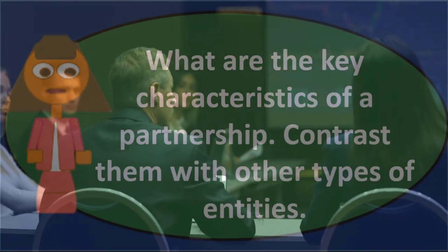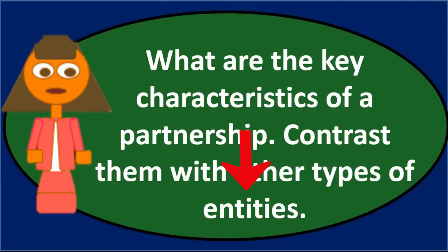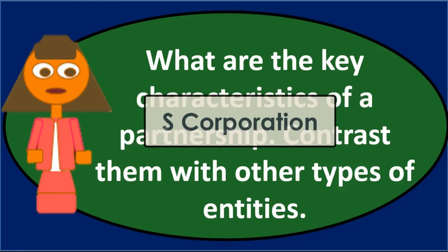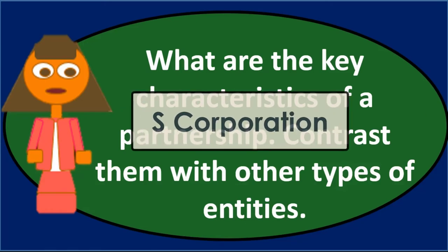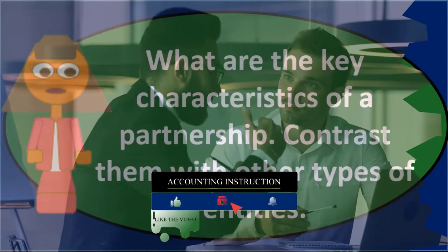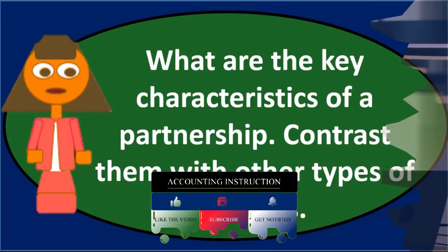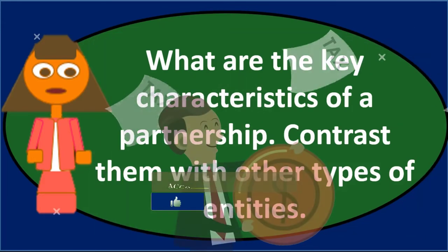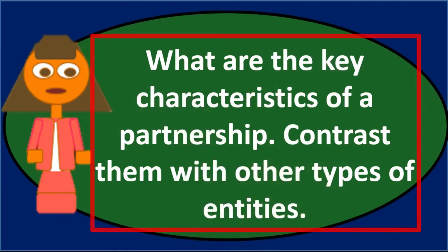These corporate drawbacks have led to hybrid entity types: the S corporation and the LLC. An S corporation leans toward being a corporation — a separate legal entity — but adds flow-through characteristics so income is not taxed at the corporate level. It flows through to individuals like a partnership, reducing or eliminating double taxation, while ideally maintaining liability protection. Note that some states may still impose taxes at the entity level.